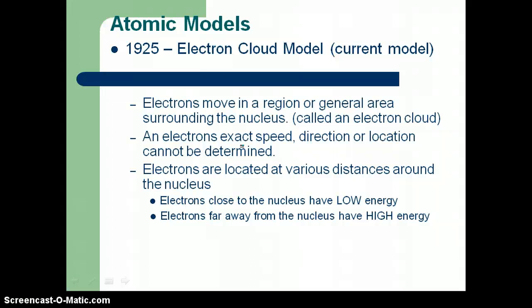Currently, we use the electron cloud model. And again, dates you don't have to know. But just the idea, kind of when, how much longer it took to find this out. And so we now know that electrons are in a region or general area surrounding the nucleus. And they call this an electron cloud. The speed, direction, and location cannot be determined at any one time. They could take an image or a picture of that particular electron and know where it was. But knowing where it's going is not easy.